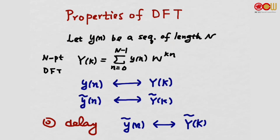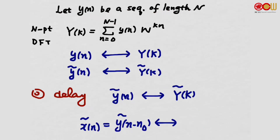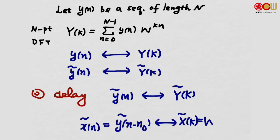Now let's say the first property is the delay property. We have Y-tilde[n] whose DFS coefficient is Y-tilde[K]. Now suppose we have another periodic sequence X-tilde, which is a delayed version of Y-tilde — it's Y-tilde delayed by N0. Then its DFS coefficient is given as X-tilde[K] = W^(N0·K) · Y-tilde[K], where N0 is the amount of delay.